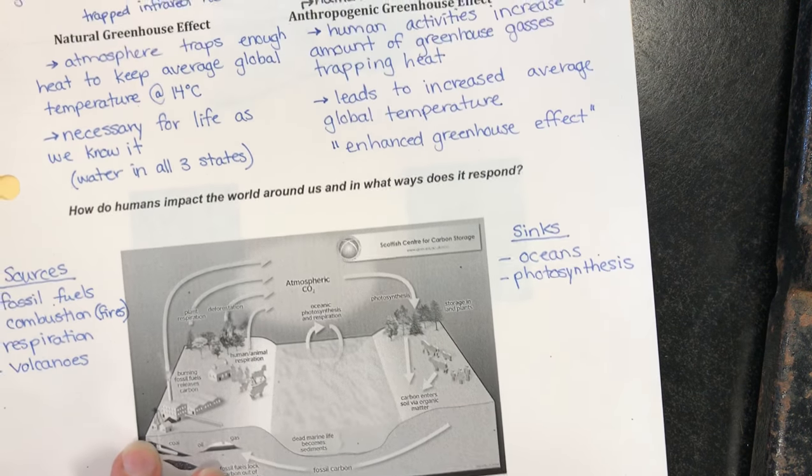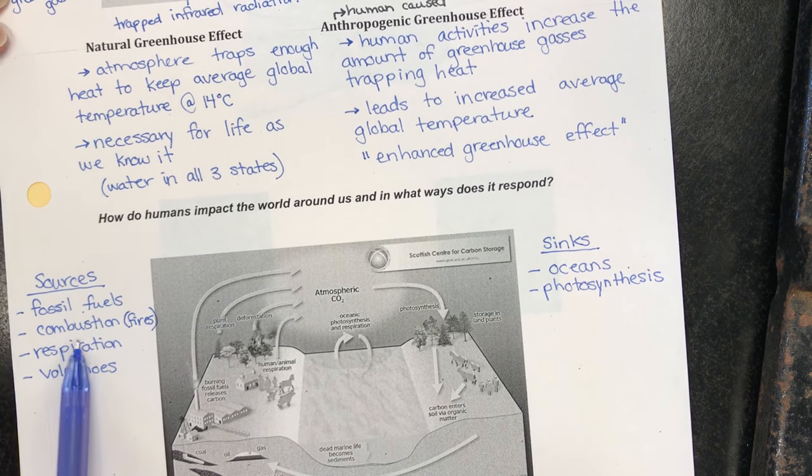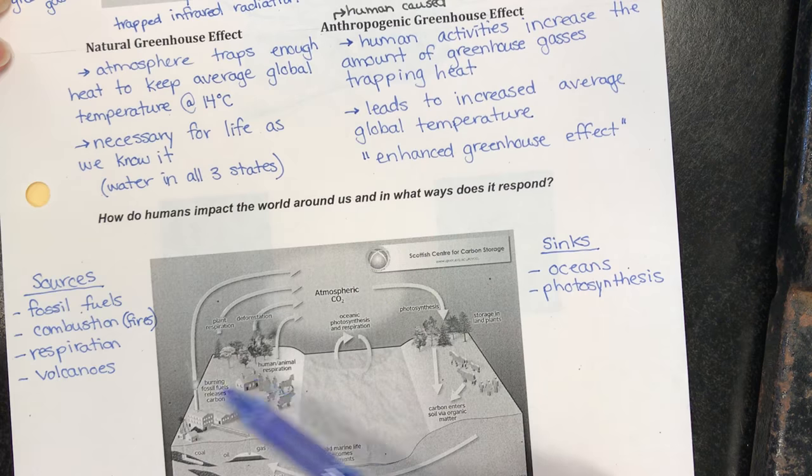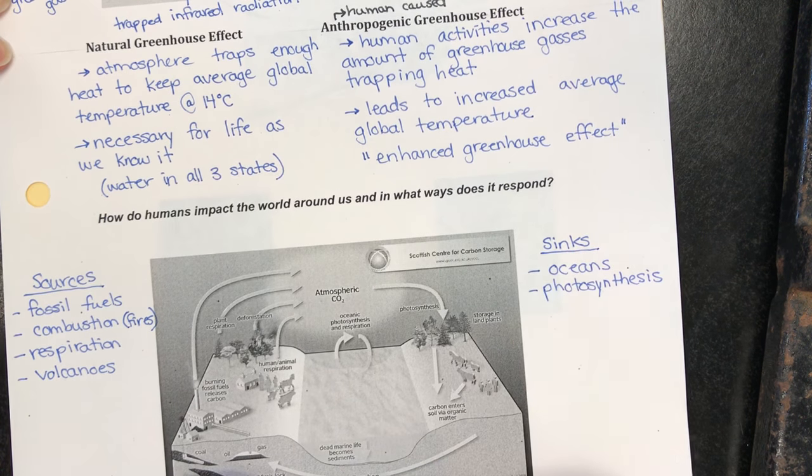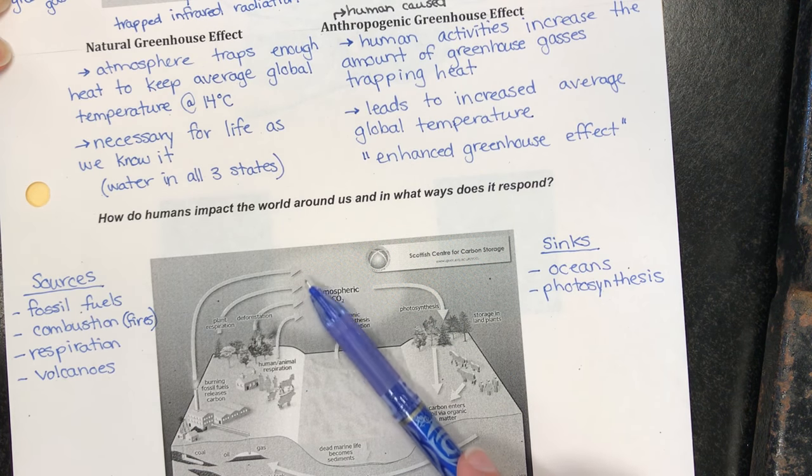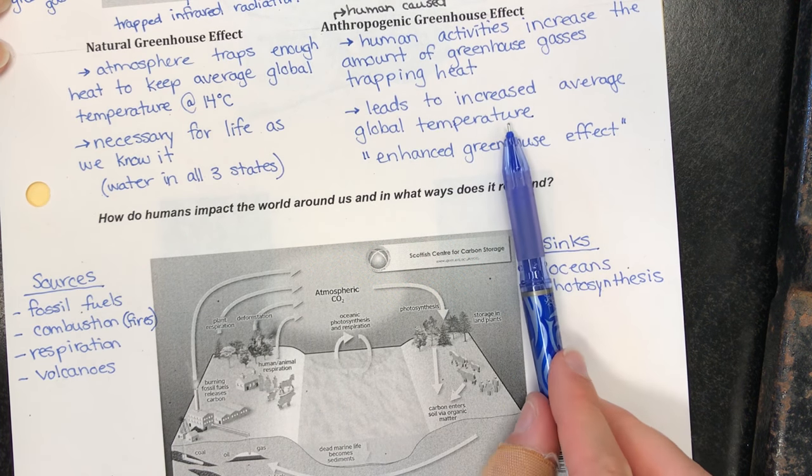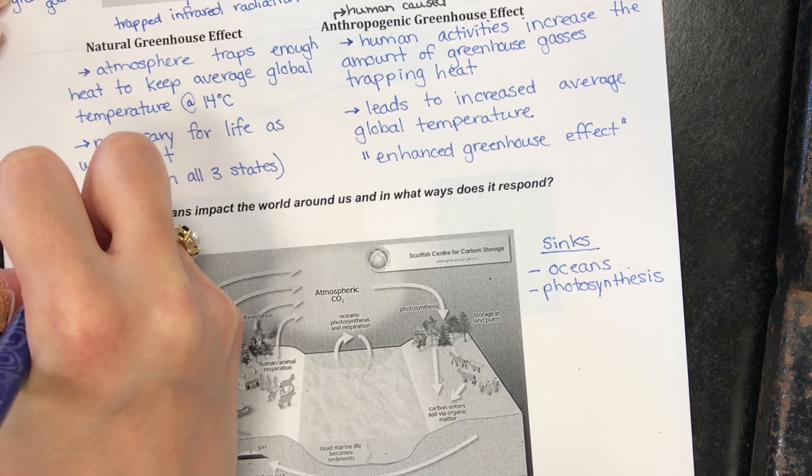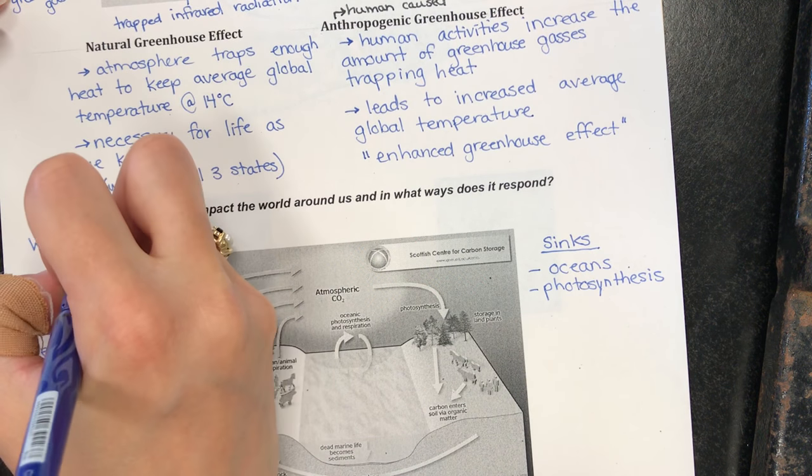But what's happening lately is that our carbon sources are outweighing our carbon sinks, which means that on average more is going out than coming back in. So we're getting an increase of greenhouse gases in the atmosphere which causes that increase in global temperature. When our carbon cycle is unbalanced.